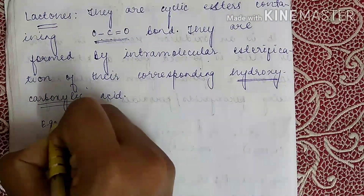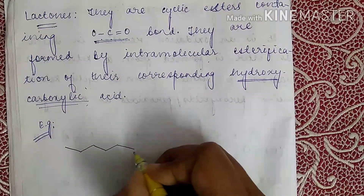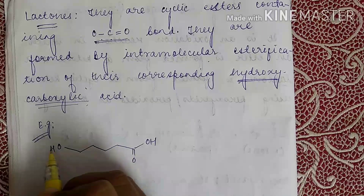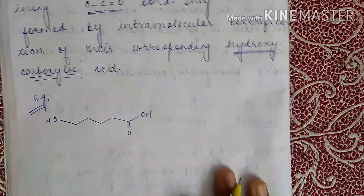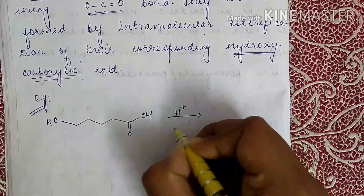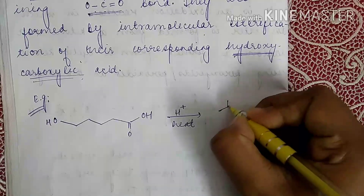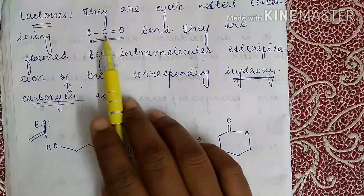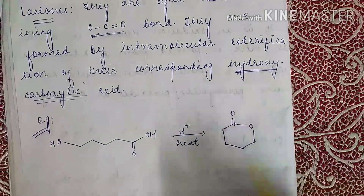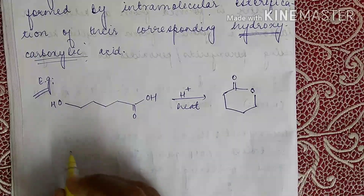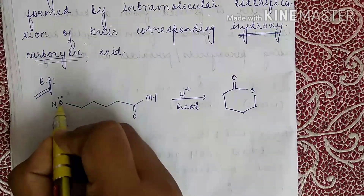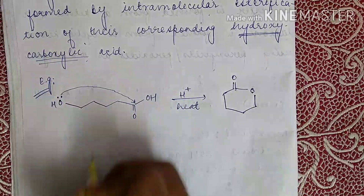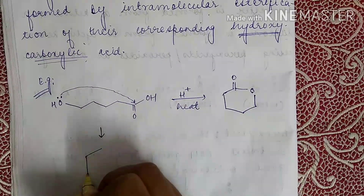To understand the formation of lactones, consider a hydroxy carboxylic acid with a hydroxy group and a carboxylic acid group. In the presence of H⁺ and heat, it leads to the formation of a six-membered ester — a lactone with an O-C(=O) bond. The lone pair of electrons on the hydroxy group attacks the electrophilic carbon of the acid, forming a ring structure.